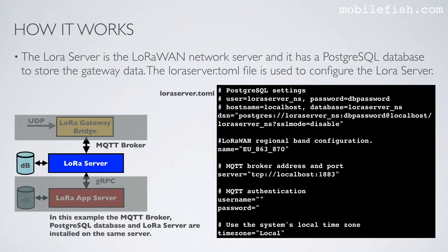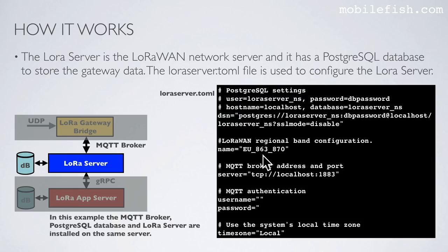The LoRa server is the LoRaWAN network server and has a PostgreSQL database to store gateway data. The LoRa server TOML file is used to configure it. This includes the PostgreSQL data source name, username, password, database hostname, and database name. SSL is not used. The LoRaWAN regional band is configured in this file. The MQTT broker address and port are also set here, with no MQTT authentication. The system local time zone is used. In this example, the MQTT broker, PostgreSQL database, and LoRa server are all installed on the same server, indicated by the use of localhost.